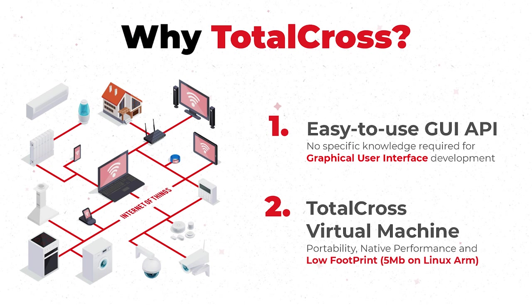TotalCross is divided into two main components. First, we have a really easy-to-use API — there is no specific knowledge required to build applications. And we also have a virtual machine that guarantees native performance, portability between all operating systems, and a low footprint. For Linux ARM, the virtual machine is only 5 megabytes, and an entire application is 10 to 12 megabytes — a nice footprint for this kind of device.